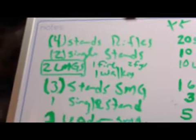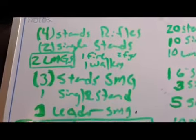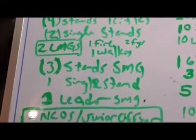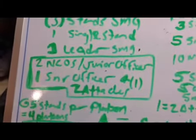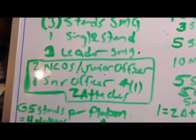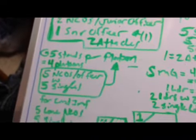So, looking at what I've got, I'm not sure this is going to come out. Out of each sprue, I have four stands of rifles, two single stands, two light machine guns, one firing, one walking, two figs each. Three stands of submachine guns, one single stand, and one leader with a submachine gun. Then I have two NCOs slash junior officers and one senior officer. And there are two attaches, or whatever you want to call them. The woman with the bag and the guy with the bag. Not sure how I'll use those. But the leaders.